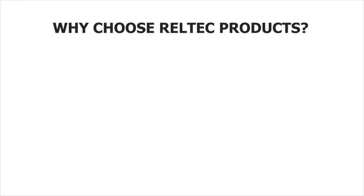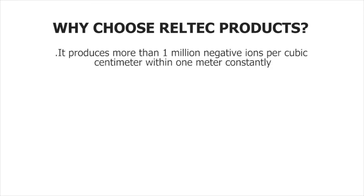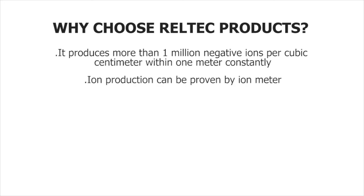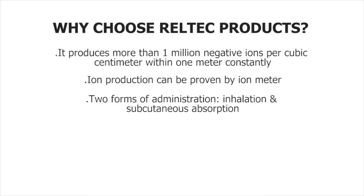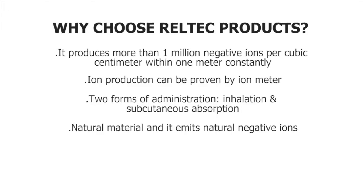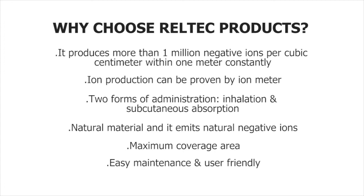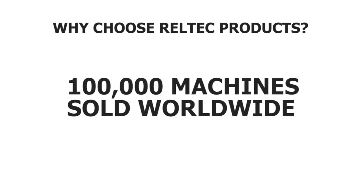Why choose RELTEK products? It produces more than 1 million negative ions per cubic centimeter within 1 meter, constantly. Ion production can be proven by ion meter. Two forms of administration: inhalation and subcutaneous absorption. Natural material that mimics natural negative ions. Maximum coverage area. Easy maintenance and user friendly. Stability. And most importantly, we have sold more than 100,000 machines worldwide.